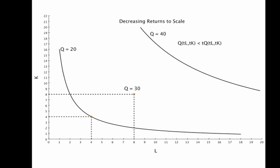With decreasing returns to scale, doubling inputs fall short of doubling output.